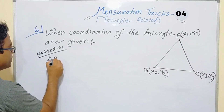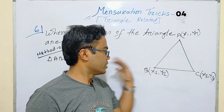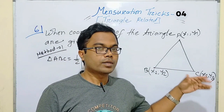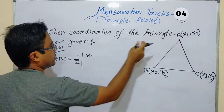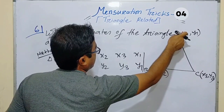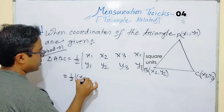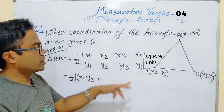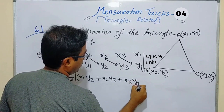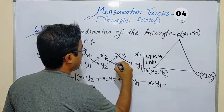Considering the vertices are taken in anti-clockwise order, we can write: area of triangle ABC equals half of the determinant-style expansion — x1(y2 minus y3) plus x2(y3 minus y1) plus x3(y1 minus y2). Going upward to downward gives positive terms; downward to upward gives negative terms.